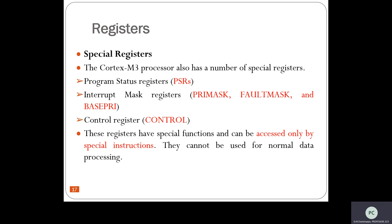I'm going to explain the special registers of the Cortex M3 processor. In the Cortex M3, we have mainly three special purpose registers. The first one is called the Program Status Register, with the short form PSR. The second one is the Interrupt Mask Registers, which have three further classifications I will discuss later.